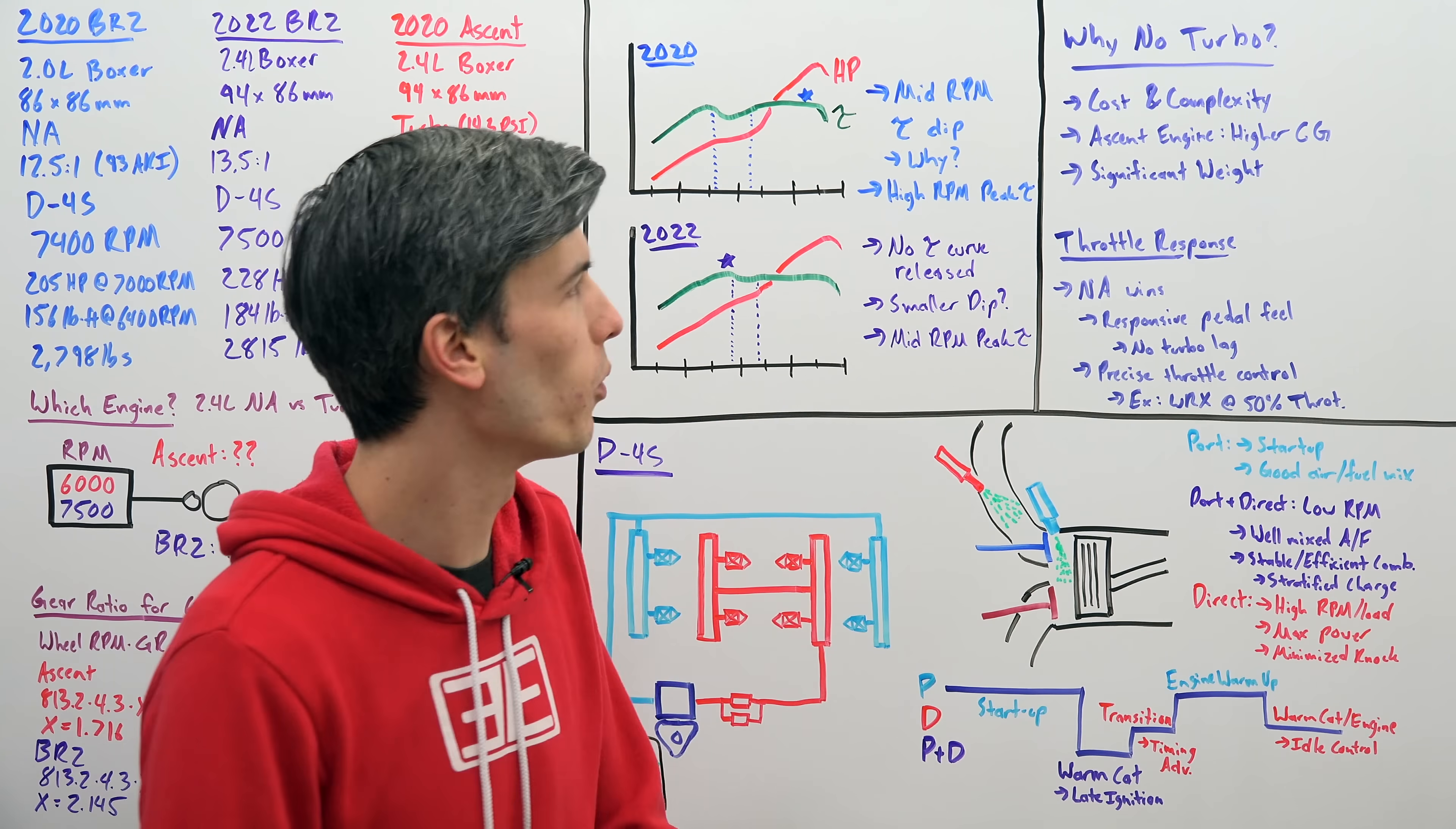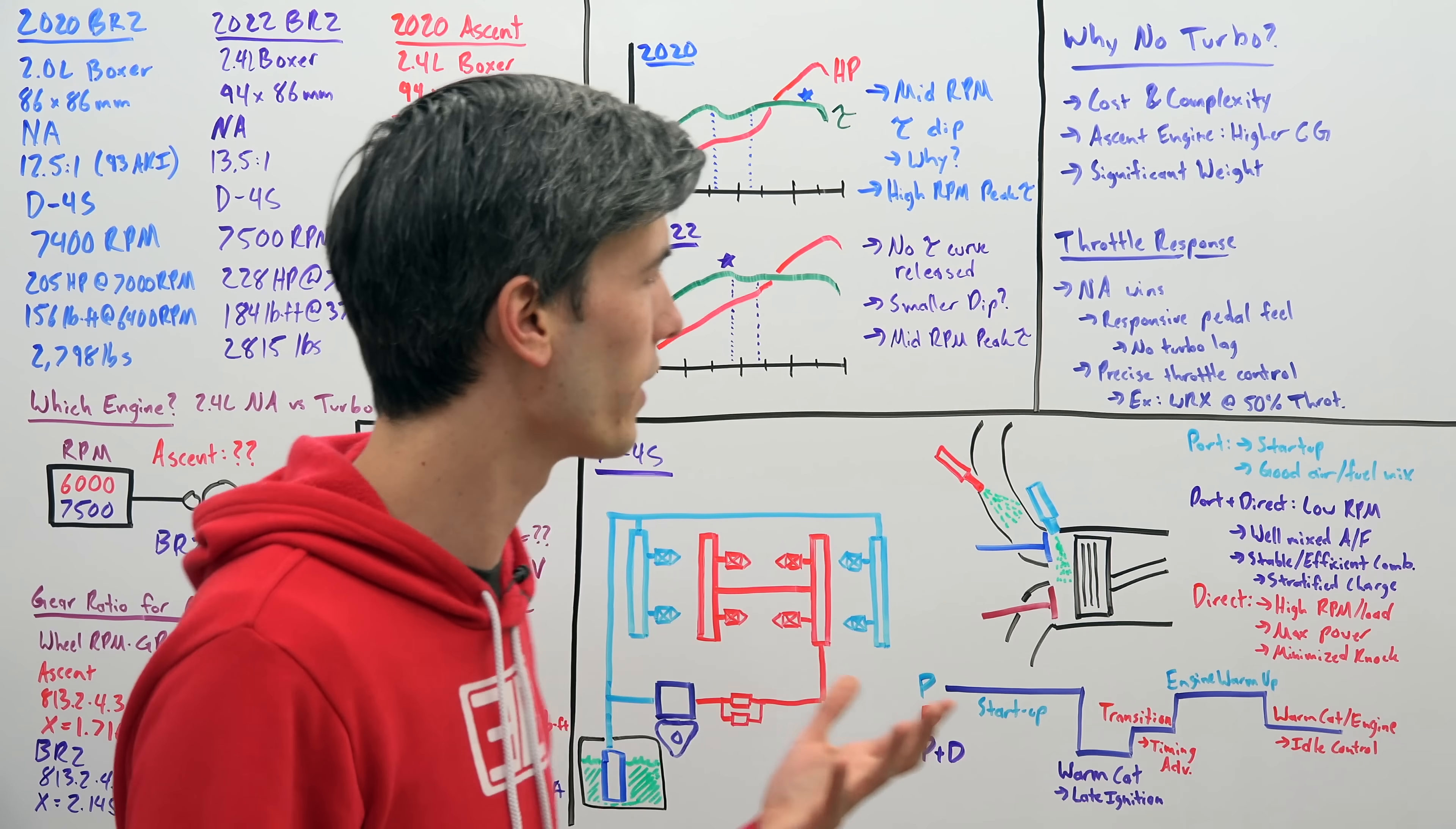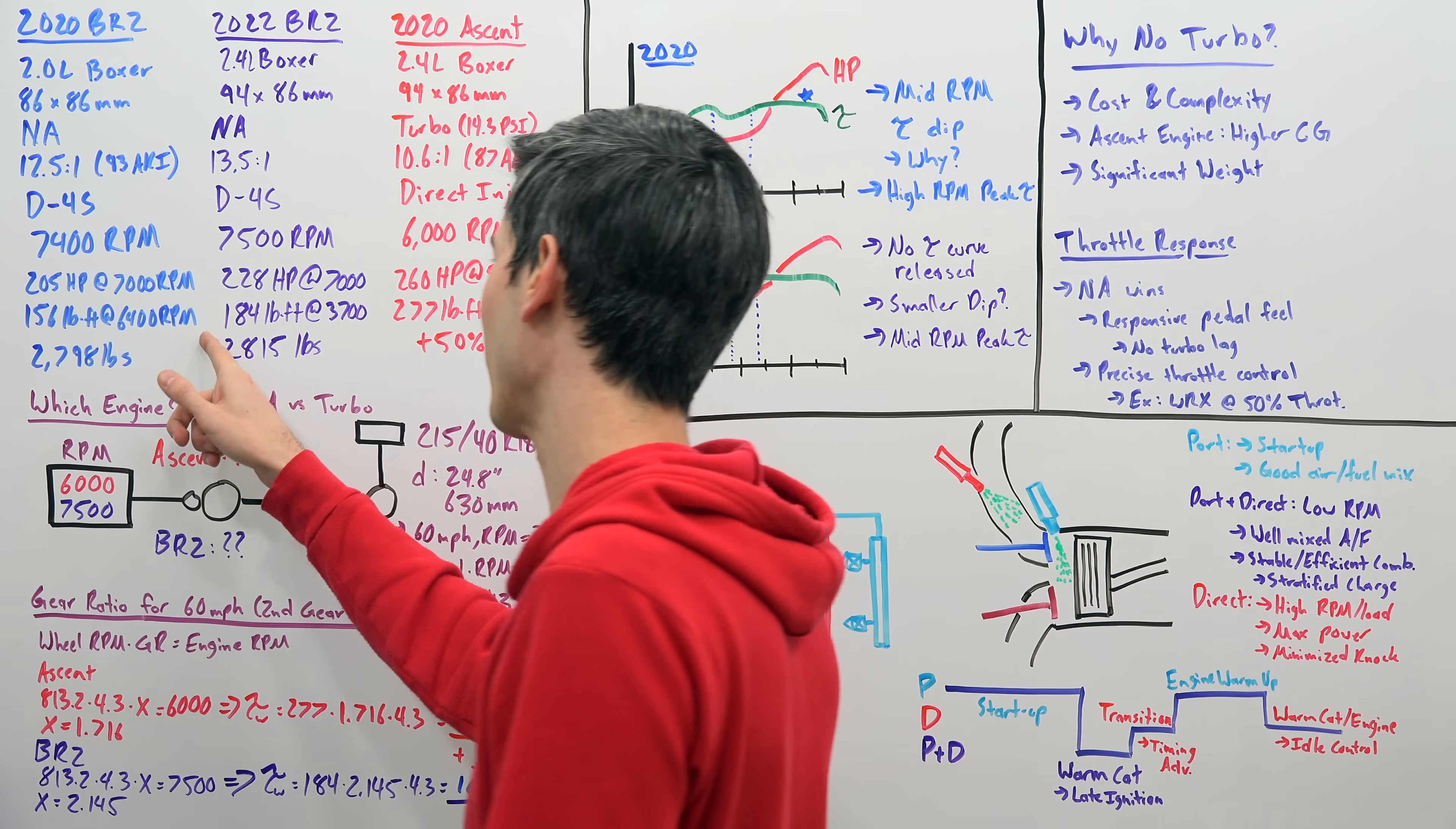So why no turbo? Well, right off the bat, easy answer, cost and complexity. If you want to turbocharge BRZ, it's going to cost significantly more. So cost and complexity. Also, another thing that was interesting is the Subaru Ascent engine has a bottom mounted turbocharger. And so that would raise this engine up, giving you a higher center of gravity. And that's one of the key attributes of this BRZ is having such a low center of gravity, very nimble. And also you're going to add weight, it could be about a hundred pounds of added weight putting in all of the turbocharger equipment. So having that weight versus keeping the weight nearly identical and yet giving you a decent little bump in power and torque, I think that's going to be really fun.